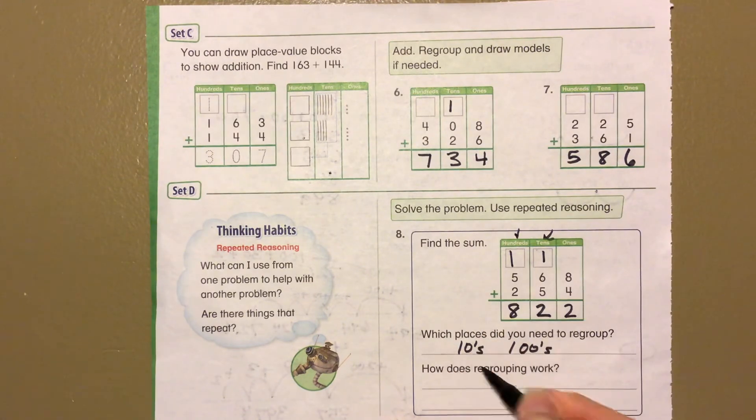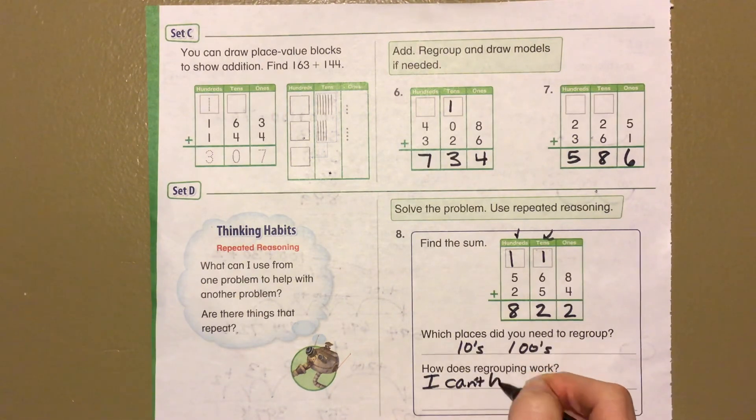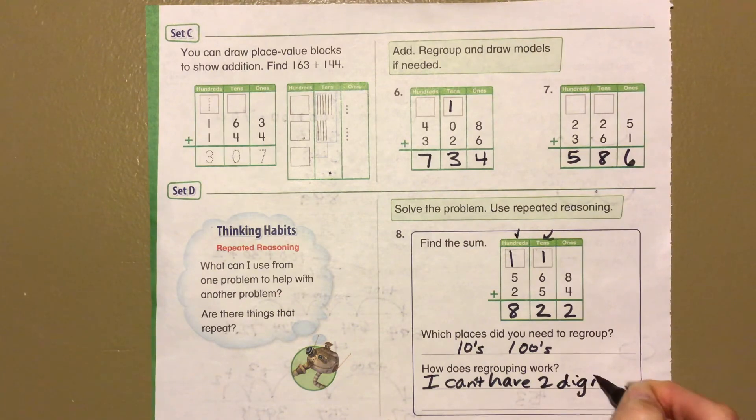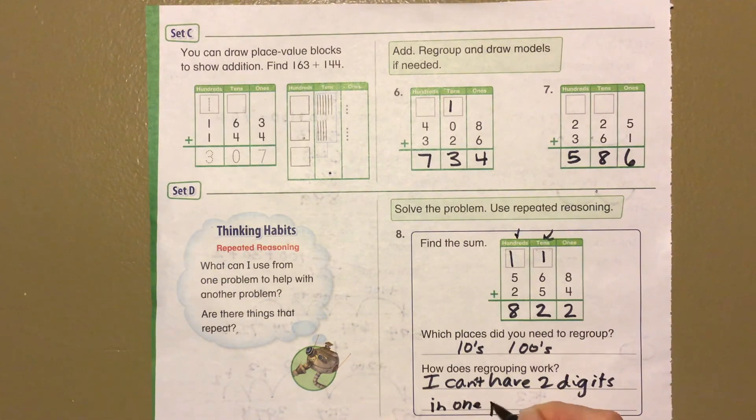How does regrouping work? So regrouping works with, that's the best way we can explain this. I can't have two digits in one place value box.